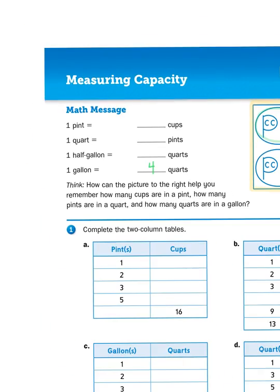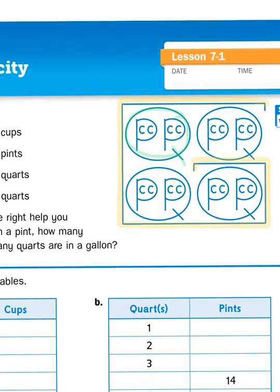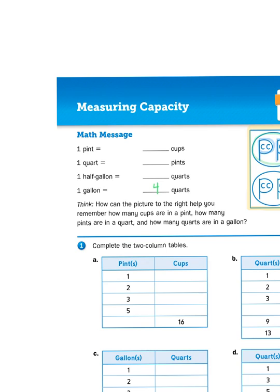Now we can do the same thing with the letter P. P stands for pints. There are two letter Ps in our Q. So there are two pints for every quart.